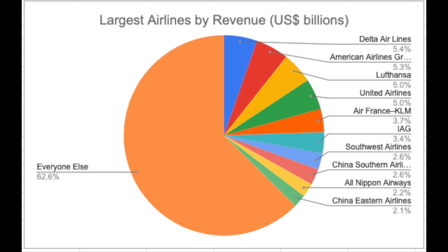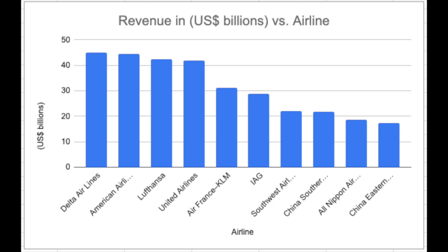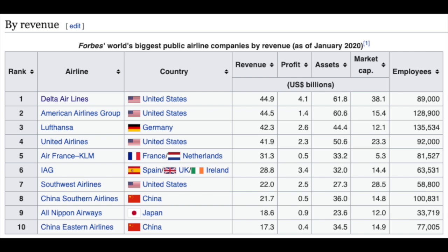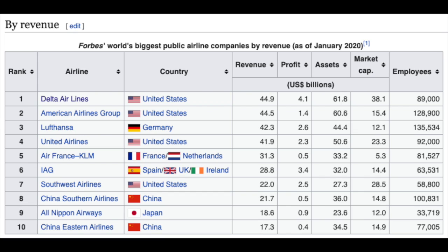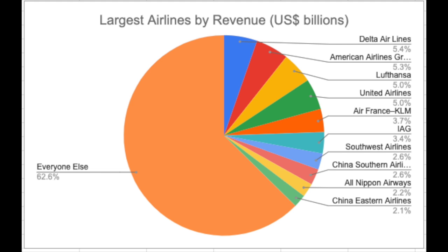This graph I made shows the 'everyone else' concept. The largest individual airlines have a revenue of about $50 billion per year each, but the total industry revenue is almost $800 billion. Of the airlines you've probably heard of, they make up maybe 45 percent of the total, so most of the airlines are actually ones outside of the familiar names.